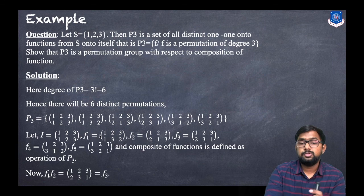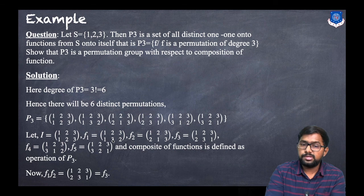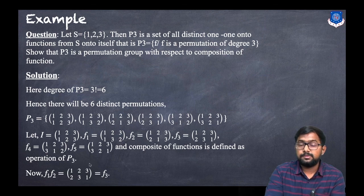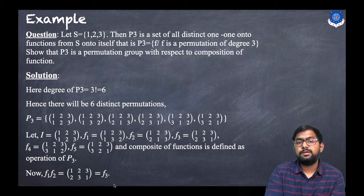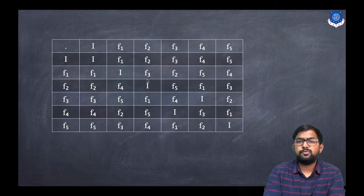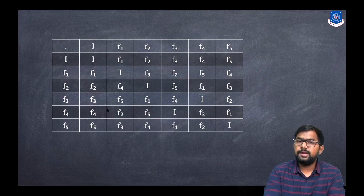Let us compute f1 composed with f2. Under f1: 1 goes to 1; under f2: 1 goes to 2, so the image of 1 is 2. Under f1: 2 goes to 3; under f2: 3 goes to 3, so the image of 2 is 3. Under f1: 3 goes to 2; under f2: 2 goes to 1, so the image of 3 is 1. This gives the permutation (1 2 / 2 3 / 3 1), which is f3. So f1 ∘ f2 = f3. In the same manner, each entry in the composition table can be calculated.